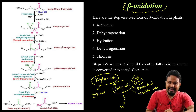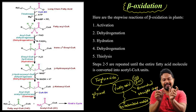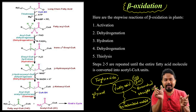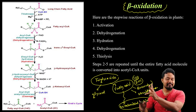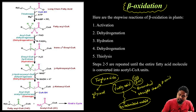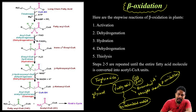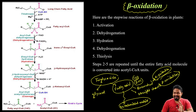Straight chain fatty acid block is processed through beta-oxidation, which we discuss today. Branch chain fatty acid block goes through beta-oxidation with an alpha-oxidation step. So the difference between beta-oxidation and alpha-oxidation: alpha-oxidation is the last topic we discuss. This is the first topic — beta-oxidation.